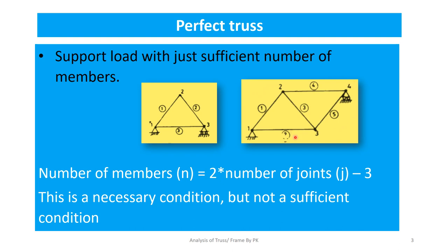In the second example, there are five members and four joints. Applying n = 2j − 3: 2×4−3 = 5, which equals the five members, confirming it is also a perfect truss. In both examples, the left side equals the right side, so both frames are called perfect frames or perfect trusses.